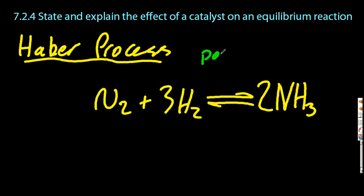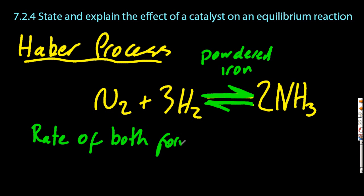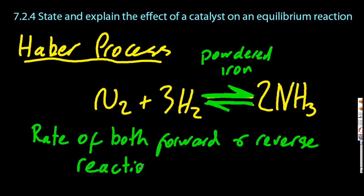The catalyst is powdered iron, and it will increase the rate of the forward reaction because it decreases the activation energy, and the powdered iron remains unchanged at the end, so you make more ammonia. But the problem is the catalyst also destroys more ammonia — it increases the rate of the forward and the reverse reactions equally.